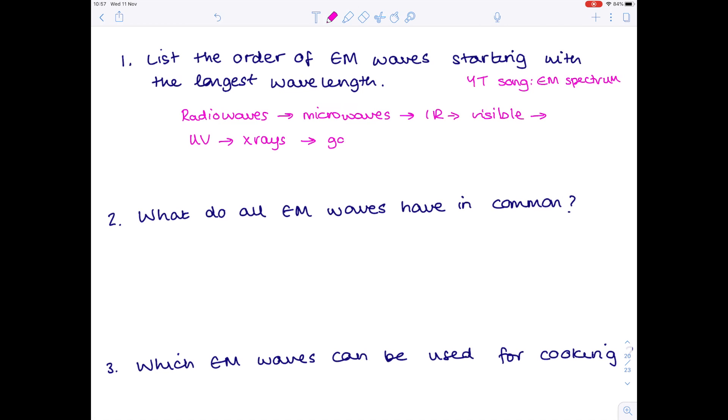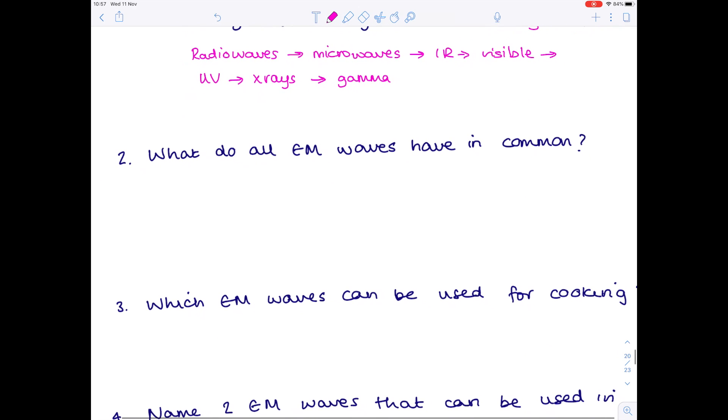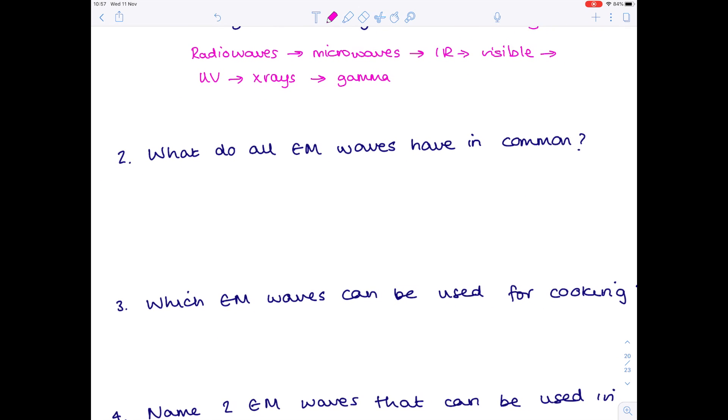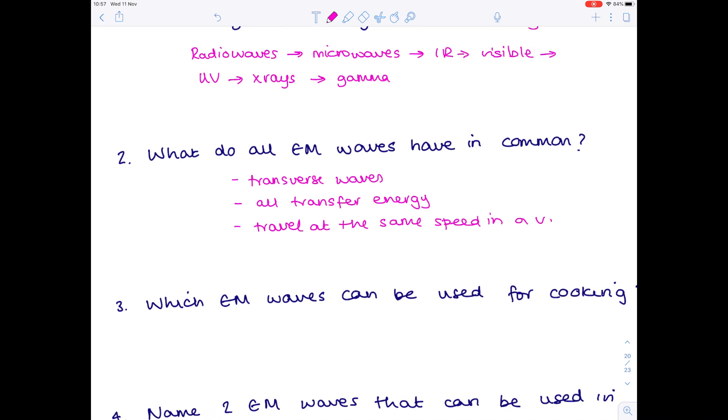What do all EM waves have in common? Number one, they're all transverse waves. Number two, they all transfer energy. Number three, they travel at the same speed in a vacuum, which is 300 million meters per second.